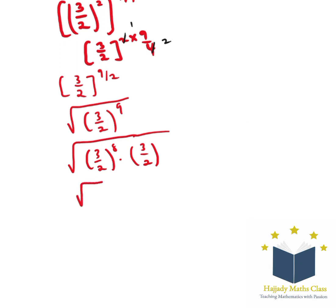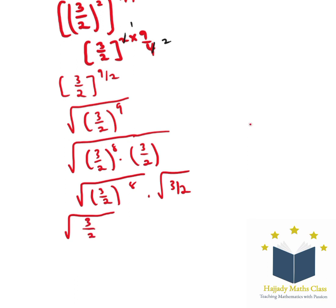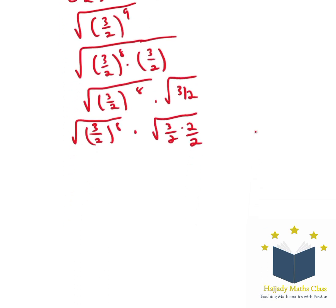Rewriting this also, we have that this is the same thing as 3 over 2 to the power of 8, multiplied by another root of 3 over 2. Here I have 3 over 2 to the power of 8, multiplied by root 3 over 2, multiplied by 2 over 2, which is the same thing as 3 over 2.